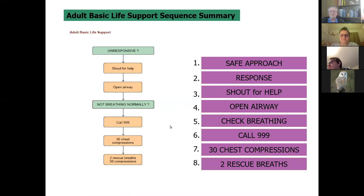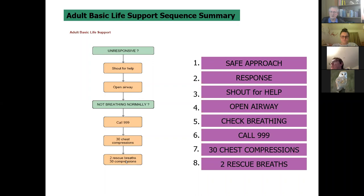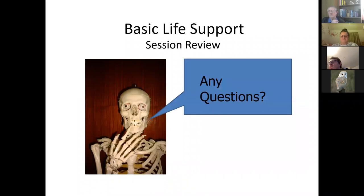If there's more than one rescuer, change position when you can. Here is the adult basic life support sequence summary: if unresponsive, shout for help, open the airway, check whether they're breathing. If not breathing normally call 999 — I'd be prepared to do that earlier because even if unresponsive you still need to call 999. Give 30 chest compressions then continue with two rescue breaths and 30 compressions however you're doing so.